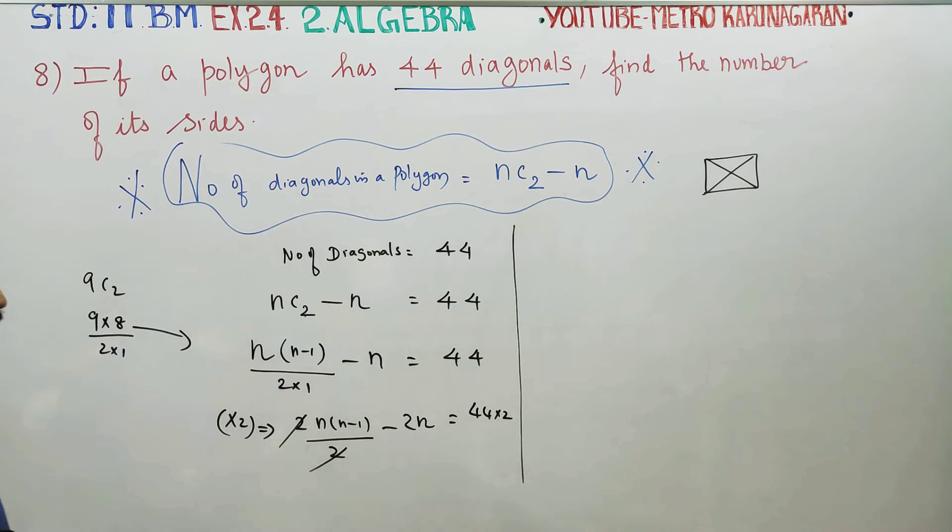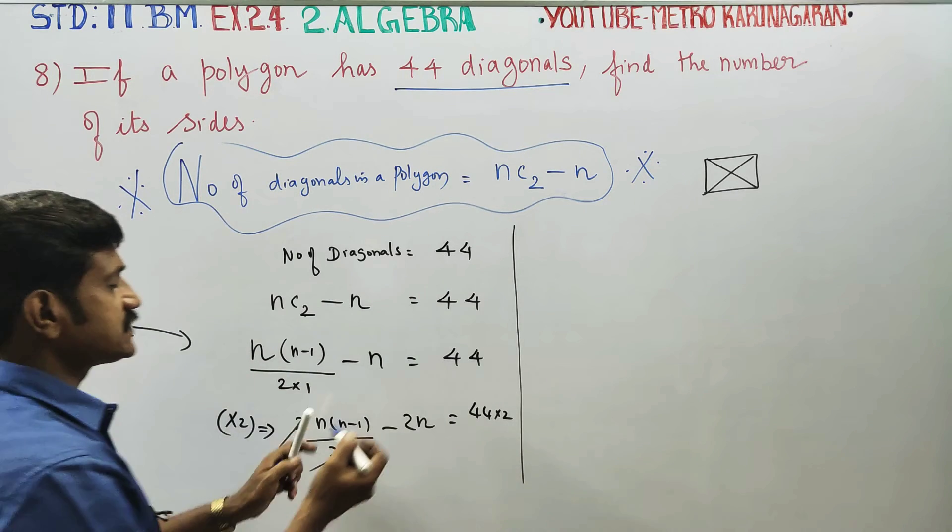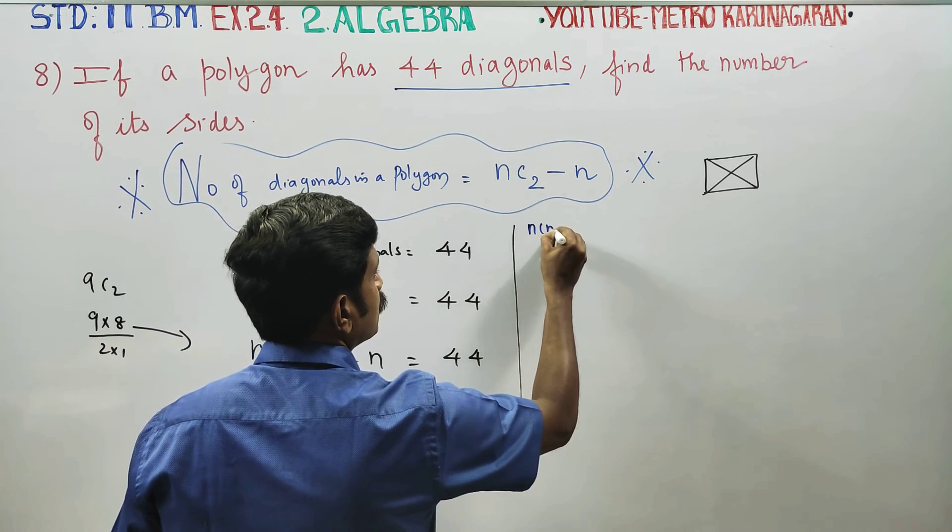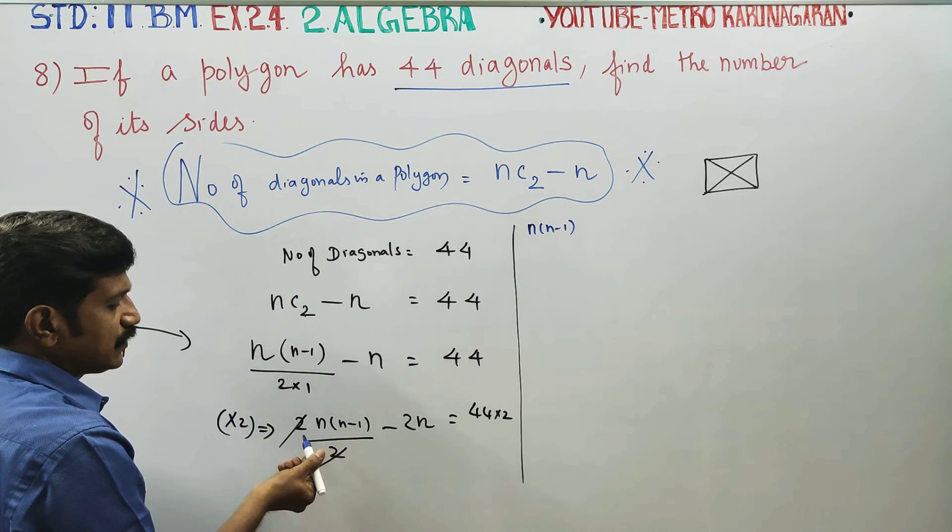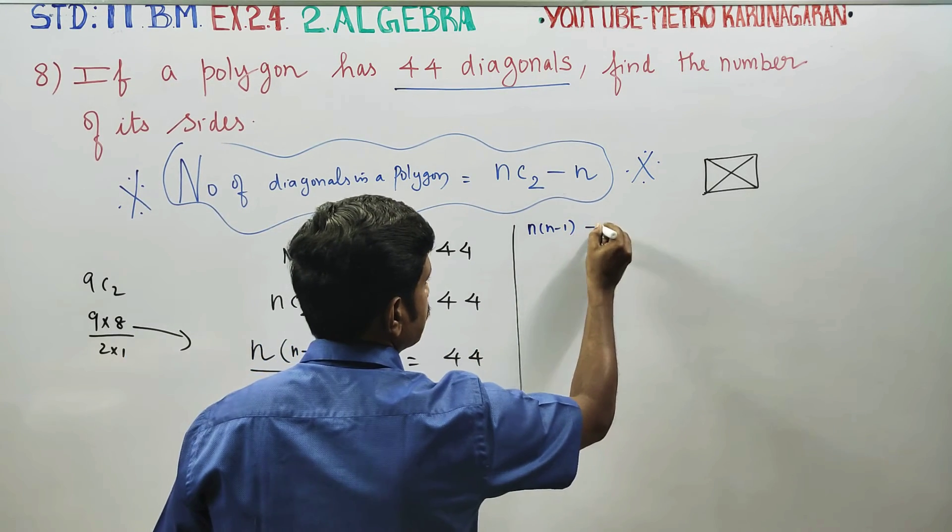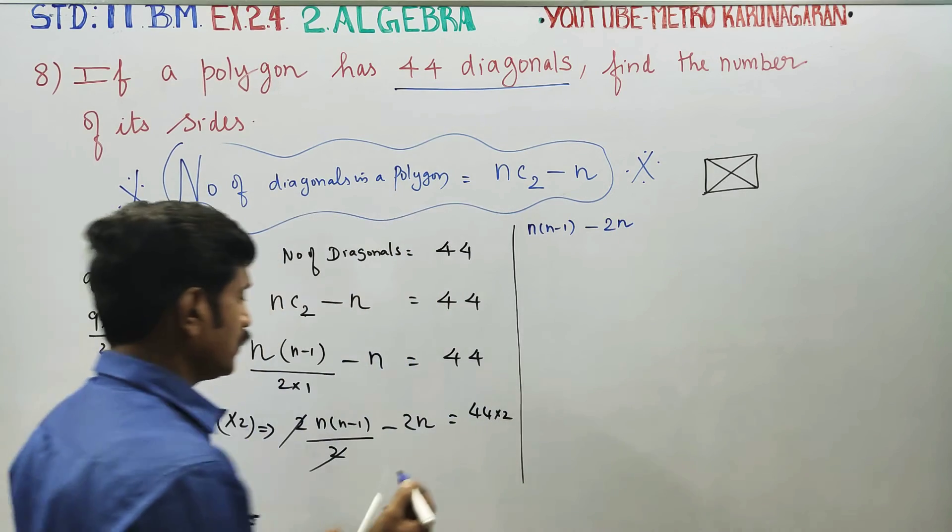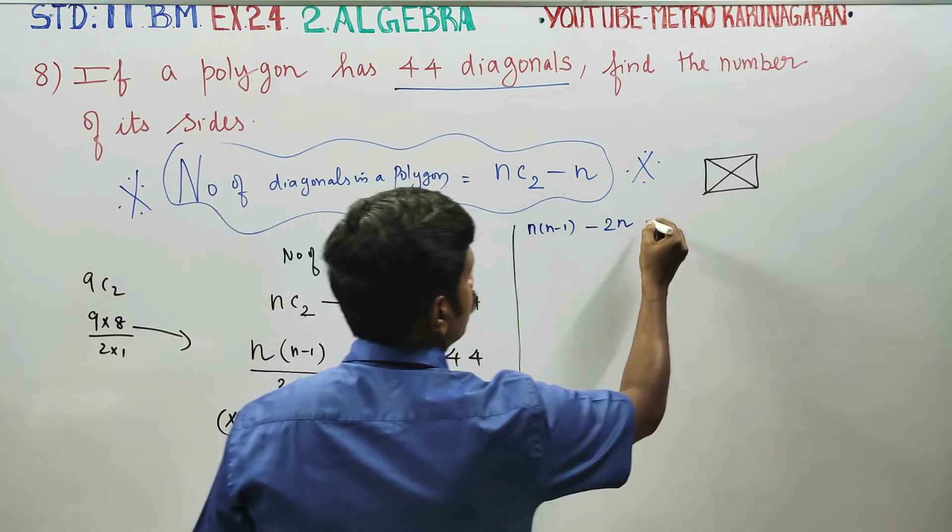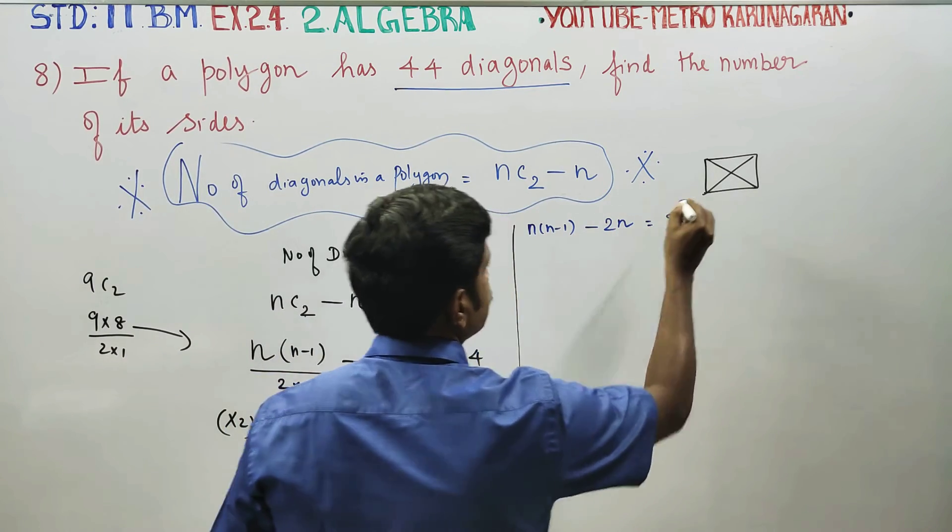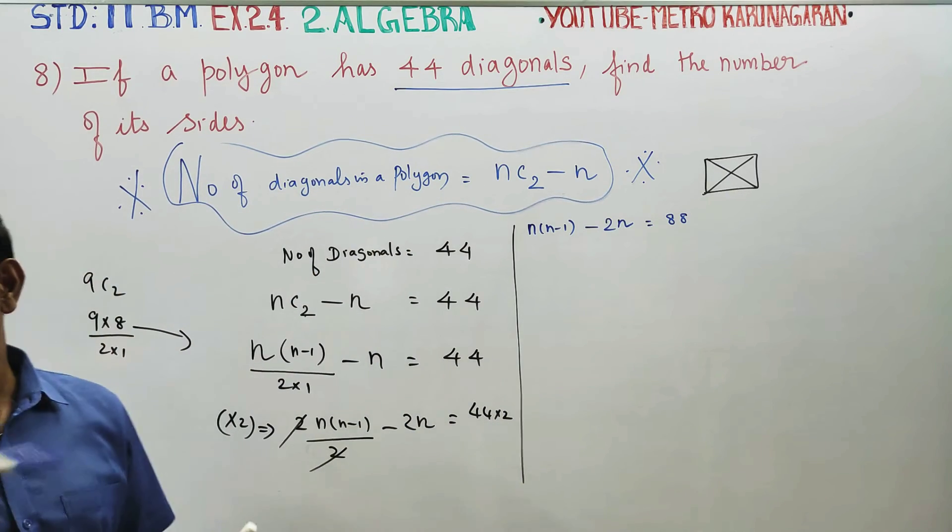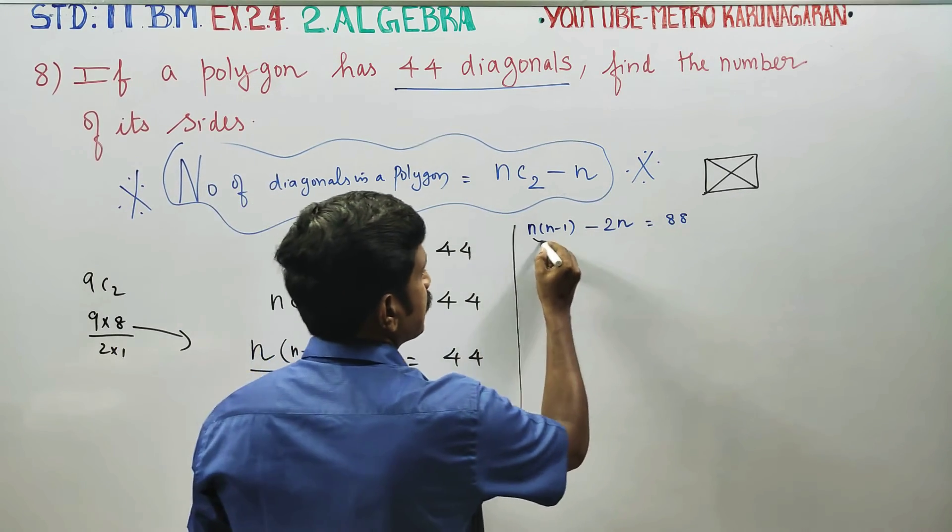After that, n into (n minus 1) minus 2n is equal to 44 times 2 is 88.